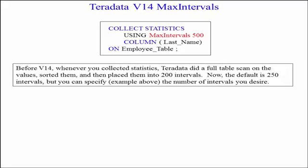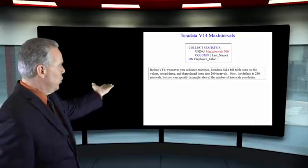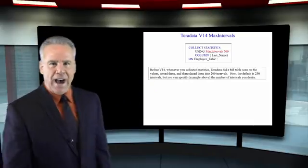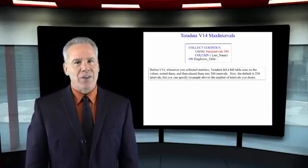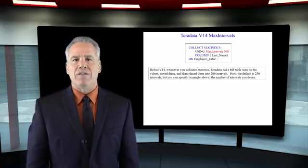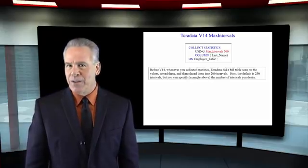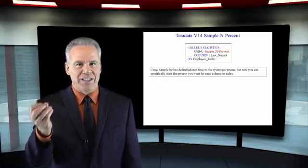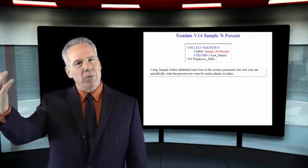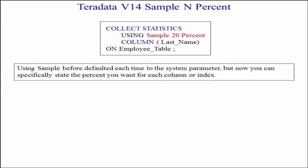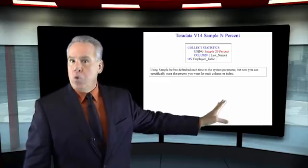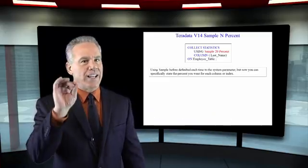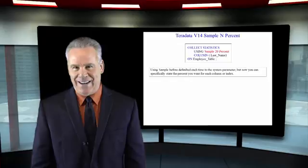Look at this example: Collect Statistics Using Max Interval 500 — this is going to put the data into 500 intervals. You could also say Collect Statistics Using Sample, and it would use the sample from the system default. Or you can say Collect Statistics Using Sample 20%, and it's going to take a sample of 20% of the data.